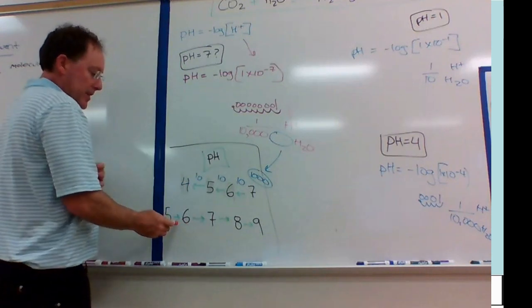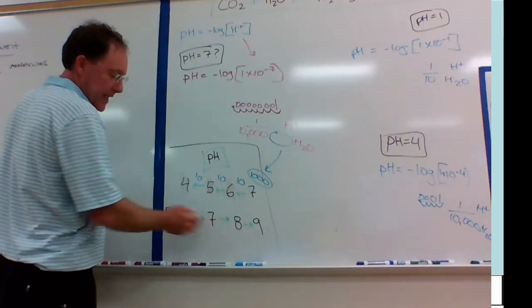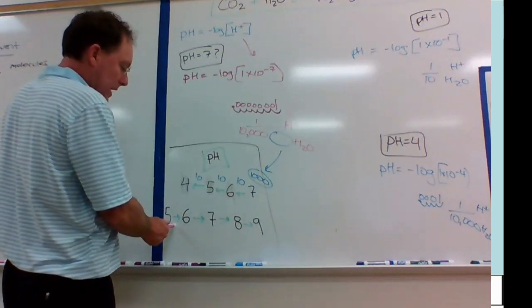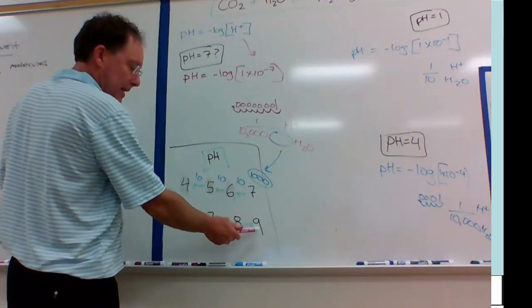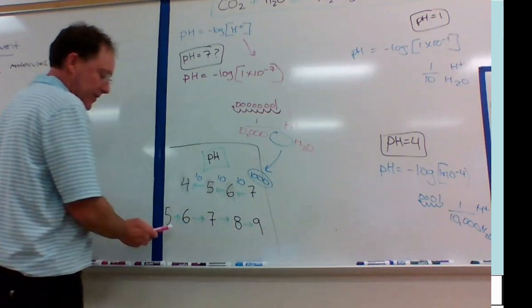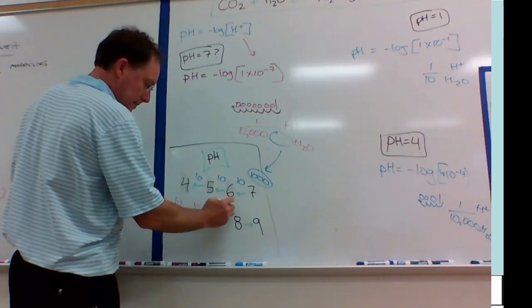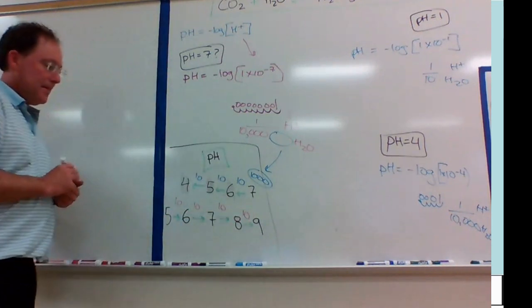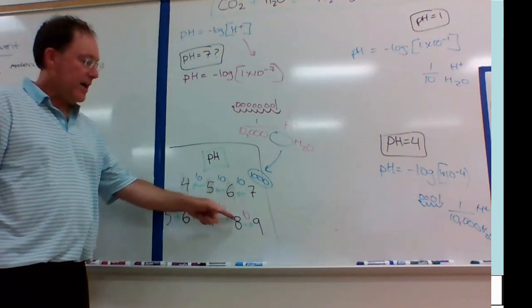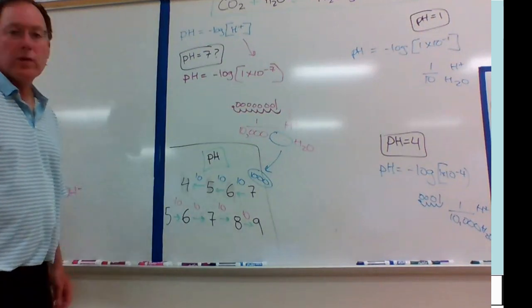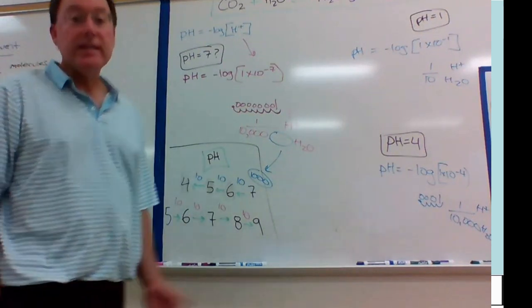Well, just understand that basicity is going the opposite direction. So how many more times basic is something with a pH of 9 than pH of 5? So that's 10,000, 100,000, 10,000. So that's 10,000 more times basic. So that's how that works.